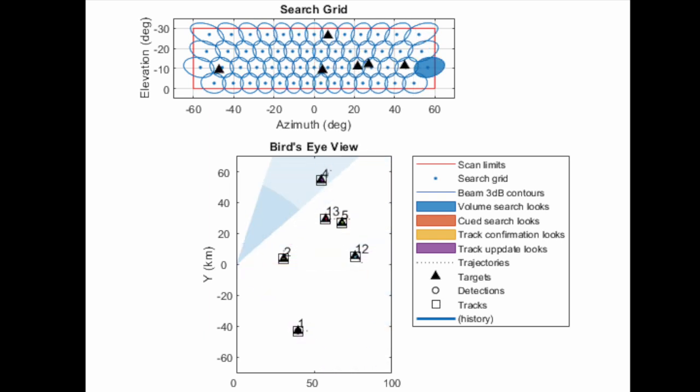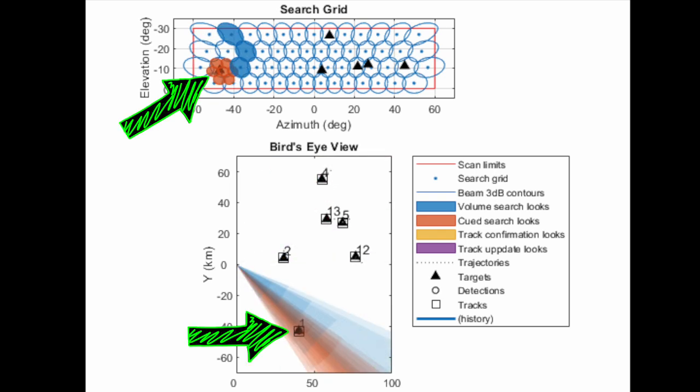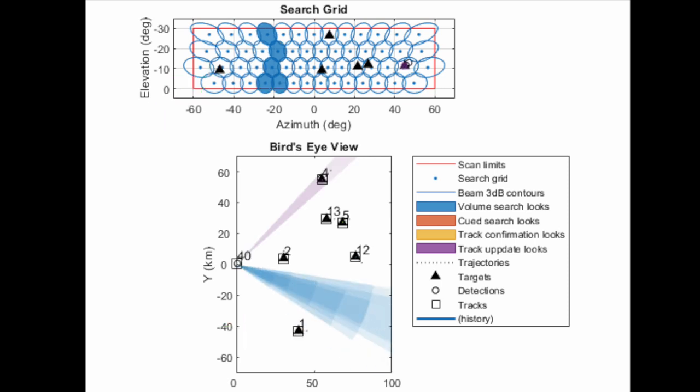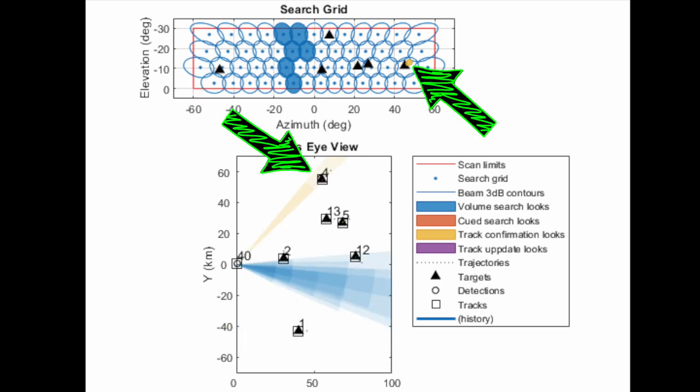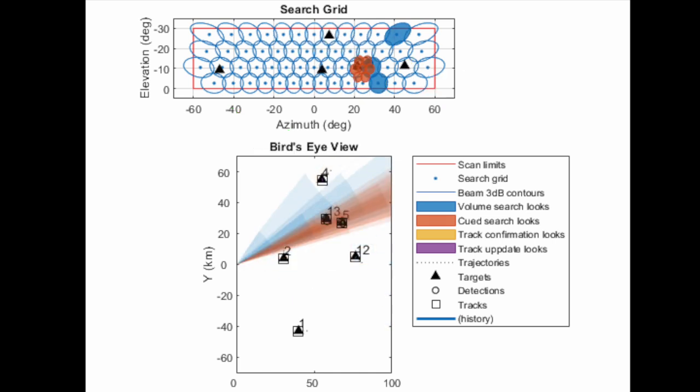Now occasionally an object is detected, and so the radar is also performing a higher accuracy queued search in those regions to get a better fix on the object. And the radar is performing the occasional track update looks and track confirmation looks, and it's doing all of this simultaneously.